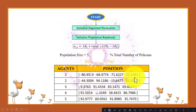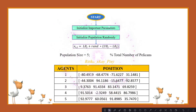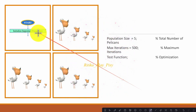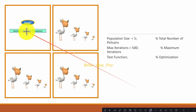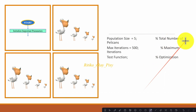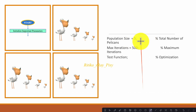In this video we will try to understand how this algorithm is working step by step using a numerical example. The first step is the parameter initialization phase, where we will initialize all the important parameters used in this algorithm. For example, population size is the total number of search agents in the current population. For simplicity, we will use only five search agents — five pelicans in the current population.